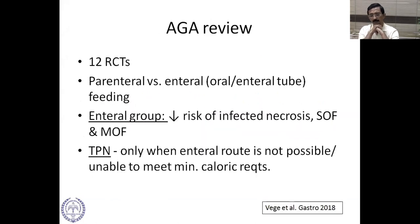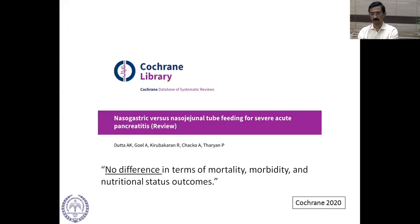Regarding parenteral versus enteral nutrition, the enteral group has decreased risk for infective necrosis and single or multi-organ failure. TPN should only be used when the enteral route is not possible or unable to meet minimum caloric requirements. There is no difference between nasogastric and nasojejunal feeding in terms of various outcome measures.